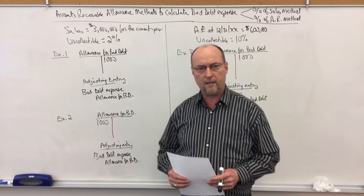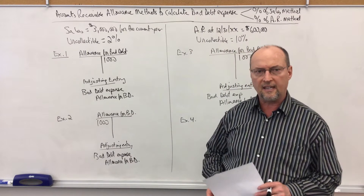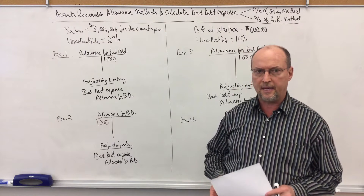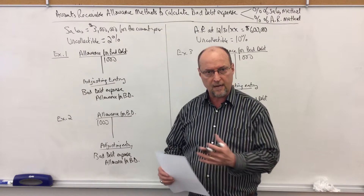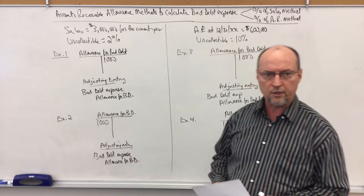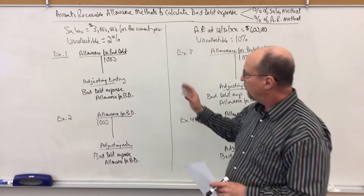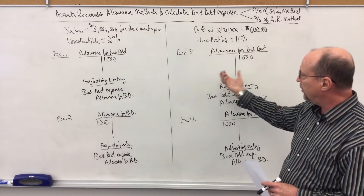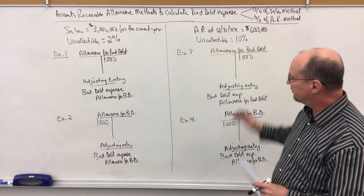We're going to look at how to calculate bad debt expense using the allowance methods. GAAP requires us to estimate bad debt in order to properly match expenses of the period to the revenues of the period. Now there are two different methods we can use, and both are acceptable. We have the percentage of sales method, which is on the left side of the board, and we have the percentage of accounts receivable method, sometimes called an analysis of receivables, on the right side of the board.